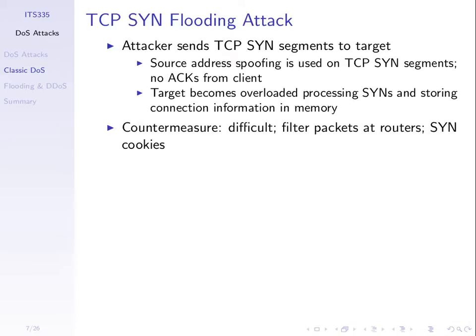Source address spoofing is used — the concept of including a fake source address in an IP datagram, not your real source address. The other benefit is that it's one way to try and hide the attacker. If the attacked computer can find out the IP address of who did the attack, then legal repercussions could be taken against the attacker. So it's also used to try and hide the attacker.